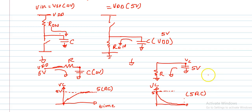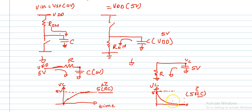This brings me to another important point. The product RC is usually referred to as the time constant, which we call tau. So 5 tau is the time taken for the capacitor to charge to VDD, and 5 tau is the time taken for the capacitor to discharge completely. Because R times C has units of time, we can perform time analysis and plot node voltages if we know the R and C values. The nature of charging and discharging is exponential, as clearly shown.